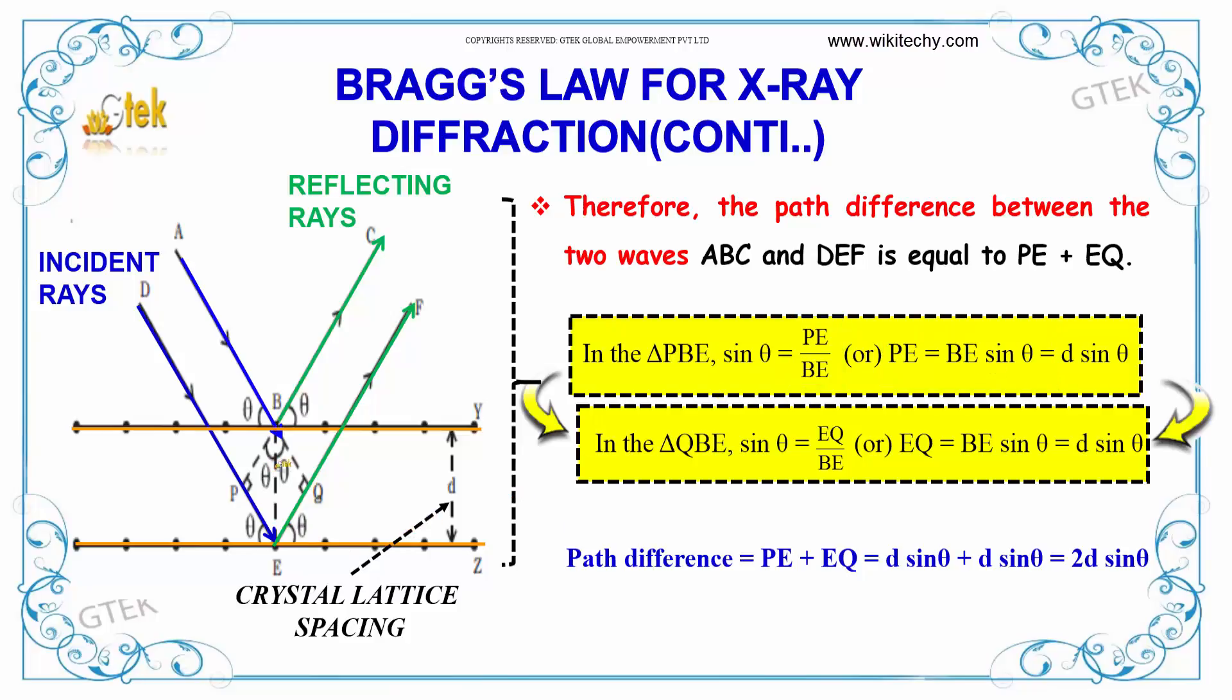Where B-E is equal to D, in the triangle B-E-Q, sin theta is equal to E-Q divided by B-E. So E-Q is equal to B-E sin theta, which equals D sin theta. The path difference is P-E plus E-Q equals D sin theta plus D sin theta, which equals 2D sin theta.